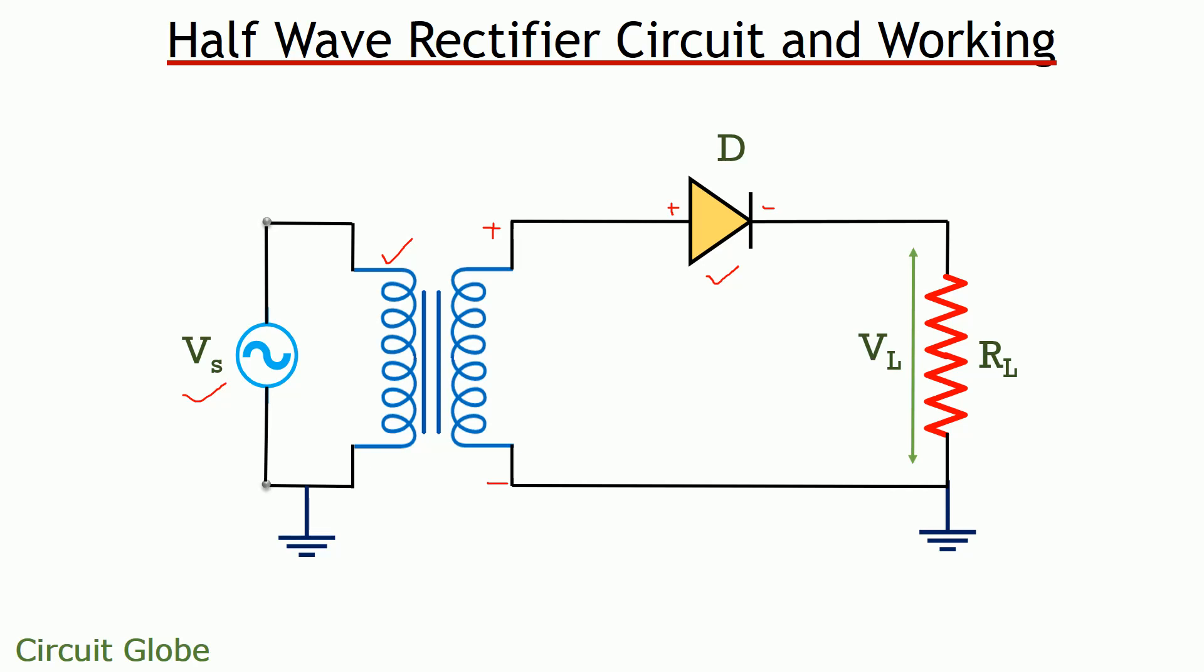So when positive half of the AC signal is applied to the circuit, then it causes the diode to come in forward biased condition as positive is connected to positive and negative is connected to negative. Due to the forward biased condition, the diode starts acting as a closed switch and due to this reason, current starts flowing through the load resistor RL. It is to be noted here that we have considered an ideal diode for which the barrier potential is 0.